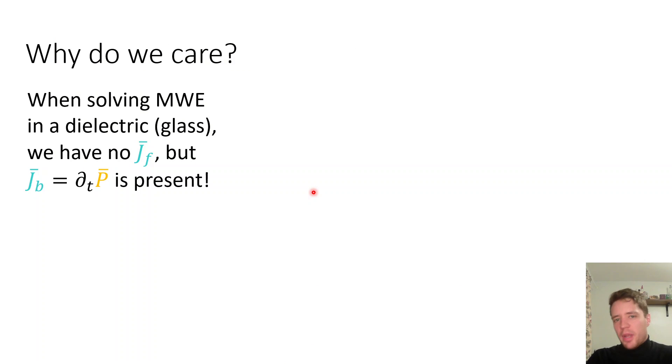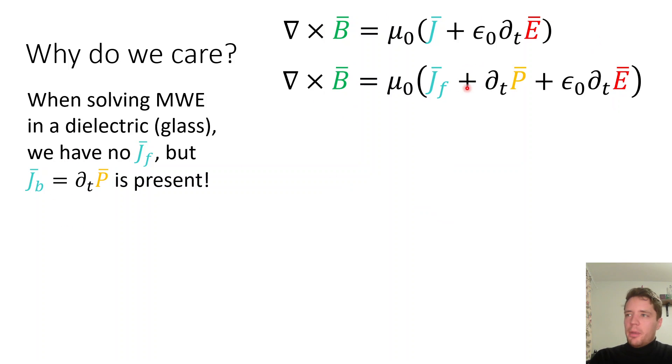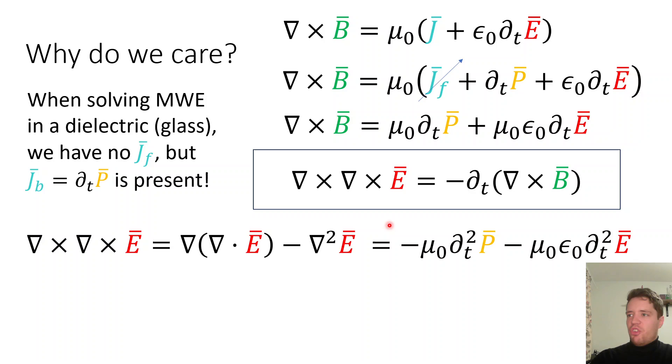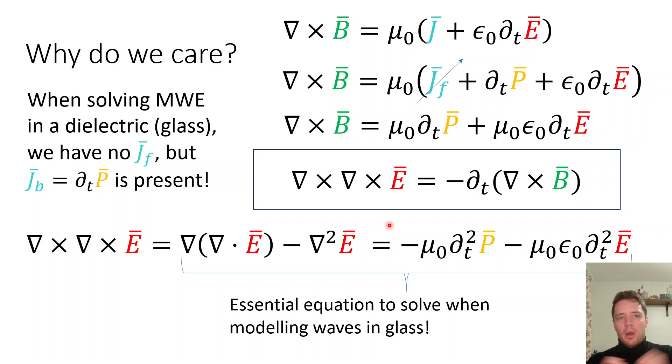Okay, but again, why do we care about this? So, if you solve Maxwell's equations in a dielectric, for example, which could be glass, in that case, we have no free charges that are present, but we do have this bound current term that's present. So, if we look at Ampere's law again, and we split it up into the free contribution and the bound contribution, then we can see that if we're in glass, we typically don't have any free charges, so we can cancel out this term. And then we get the following expression here. Then, if we take another one of Maxwell's equations and apply the curl operator on both sides, and then swap in the expression for the curl of B, we get the following equation here, which actually is one of the most important ones to solve when you want to model Maxwell's equations in glass, which hopefully I'm going to do in an upcoming video.